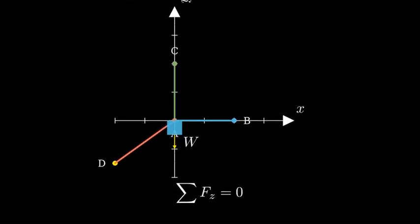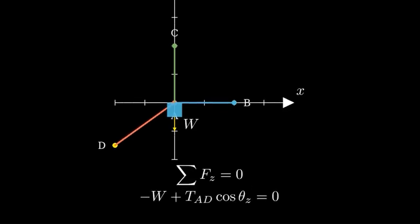To solve this problem, we need to consider that in static equilibrium, the sum of all vertical forces must equal zero. Only the vertical components of the cable tensions will support the weight.